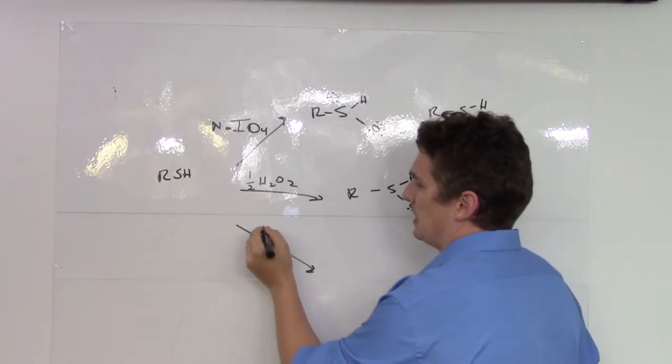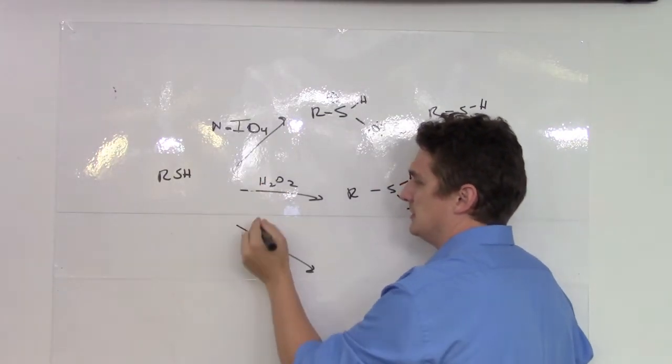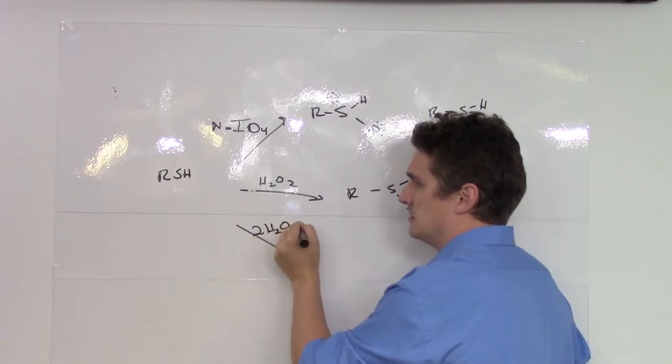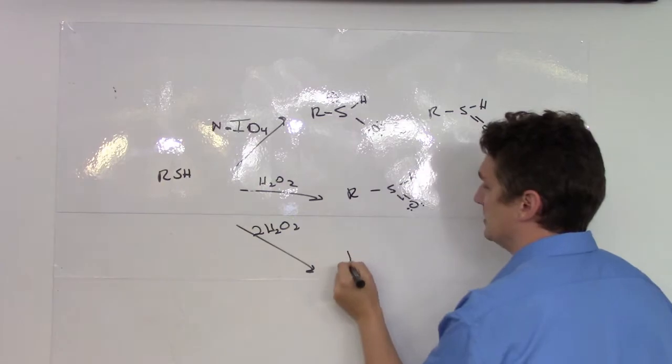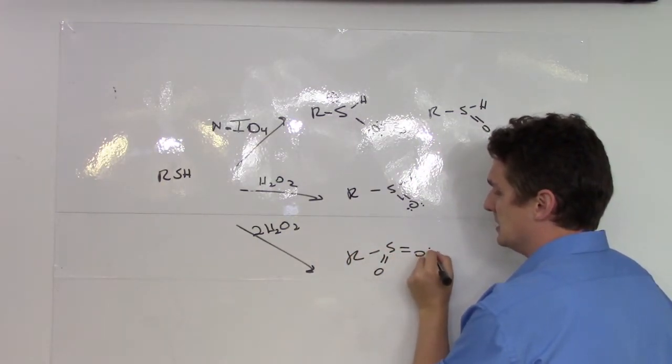Now, if we double the peroxide, sorry, not half, so here we have equivalence amount of peroxide, and here if we have twice as much peroxide, we'll end up putting sulfur in an even higher oxidation state.